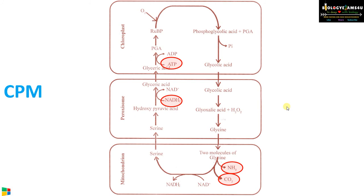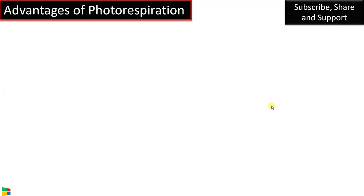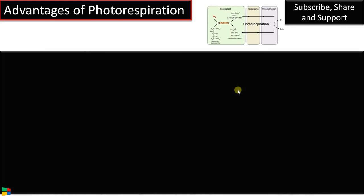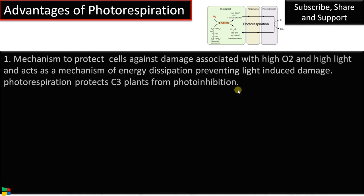Even though photorespiration is considered a wasteful process, there is growing evidence that nothing inside a cell happens wastefully. Now we have many evidences indicating the importance of photorespiration in plants. It is a mechanism to protect cells against damage associated with high O2 concentration and high light intensity, and acts as a mechanism of energy dissipation preventing light-induced damage.